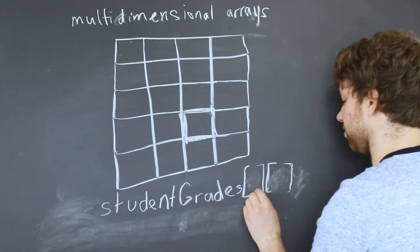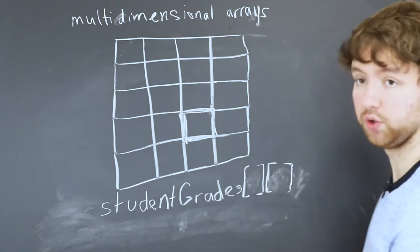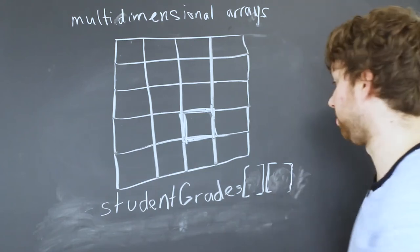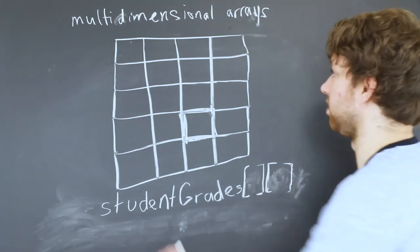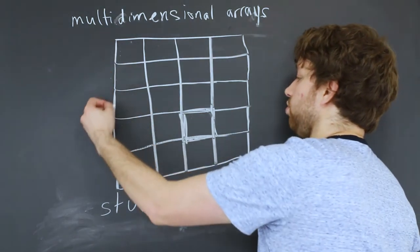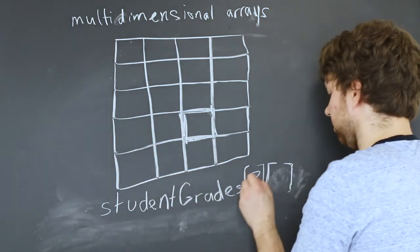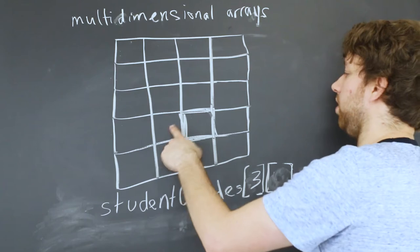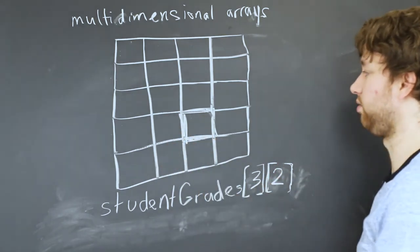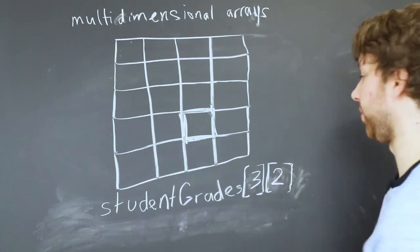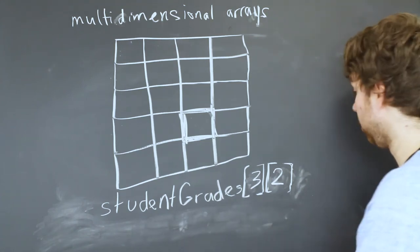We just have to think both of them are zero-based, both the row and the column. So we start with zero, zero, one, two, three, and then zero, one, two. So that is going to let us access this cell, which we could print out as an integer, or we could assign some value.